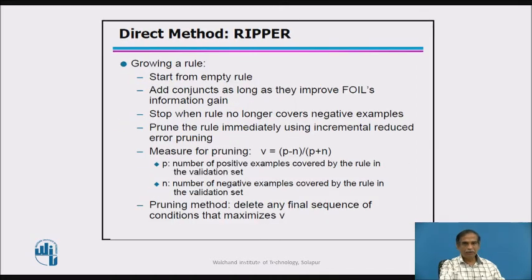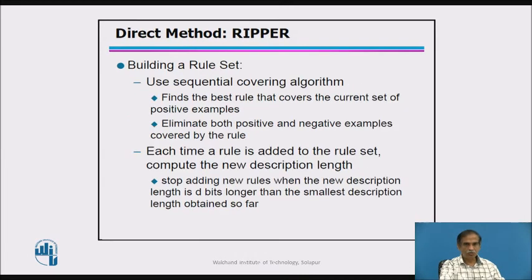For RIPPER's rule growing, start from an empty rule, apply conjuncts, and stop when no negative examples remain. Then prune the rule and find the measure of pruning. Apply it to the method and stop when the rules are properly designed to build the rule set.